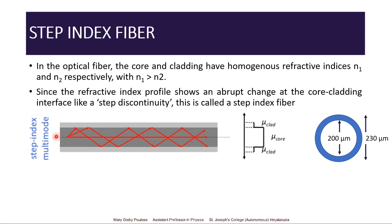This represents a step index multimode fiber, where different light pulses can simultaneously transmit through the optical fiber. The refractive index profile shows maximum refractive index at the center core region, reducing at the cladding, and further reduced outside to the surrounding medium. For a multimode step index fiber, the cladding dimension can be up to 230 micrometers while the core has a dimension of 200 micrometers.